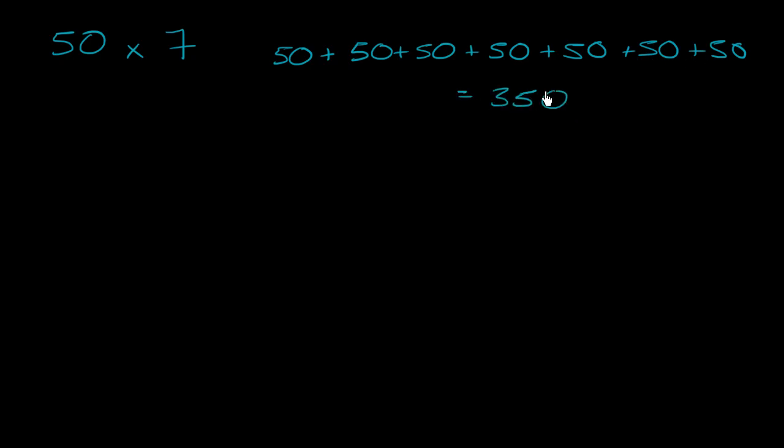So you could do it that way. But you could imagine that there is an easier way to do it. You just need to realize that 50 is the same thing as 10 times 5. So we could write this as 10 times 5, and then we're multiplying that times 7.